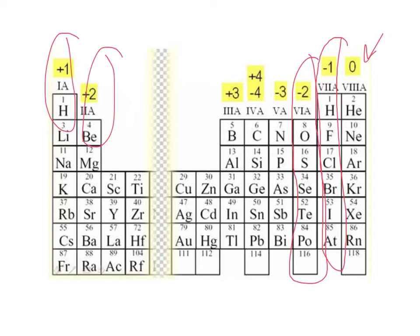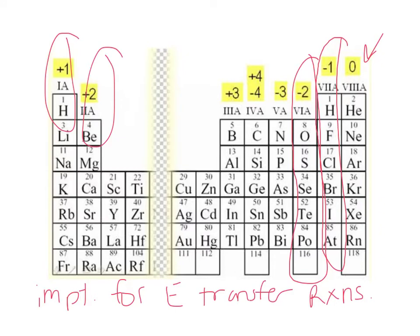We'll do more work with redox reactions in class and continue to apply them through cellular respiration. The glucose and organic compounds are transferred to NAD+ and FADH2 — electron acceptors, also called oxidizing agents. These redox reactions are very important in respiration and photosynthesis.